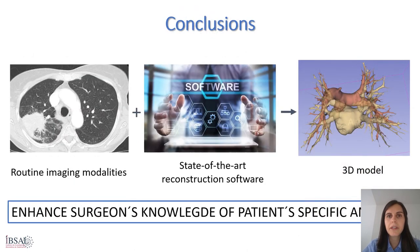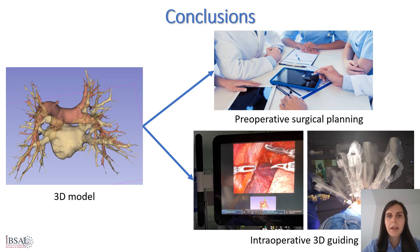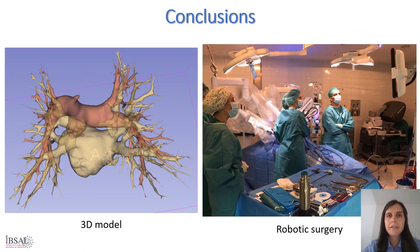In conclusion, routine imaging modalities combined with state-of-the-art reconstruction software and the subsequent creation of 3D models can enhance the surgeon's knowledge of the patient's specific anatomy. 3D models can substantially improve preoperative surgical planning and simplify complex procedures such as segmentectomies. Additionally, intraoperative 3D guiding contributes to the safety and accuracy of anatomical pulmonary resections. We can summarize that both technologies in combination could be beneficial for patients. However, further studies are warranted to determine whether preoperative 3D reconstruction and intraoperative 3D guiding during robotic surgery have an objective effect on short-term and long-term outcomes in patients undergoing anatomical lung resections.